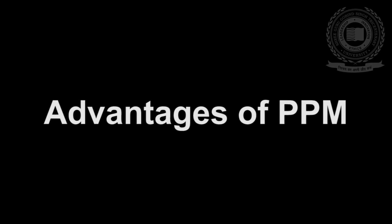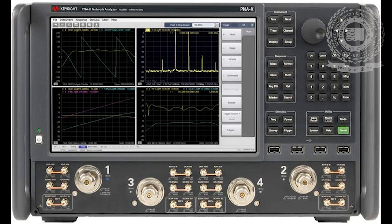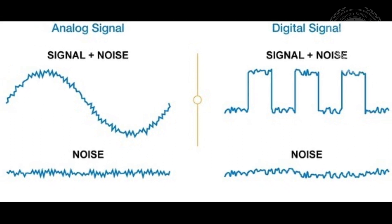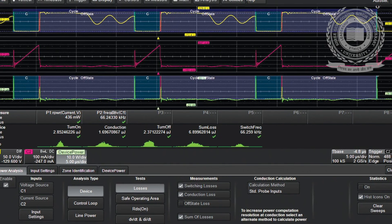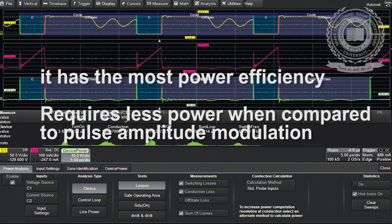Advantages of pulse position modulation: first, as it has constant amplitude, noise interference is less; second, we can easily separate signals from a noise signal; third, among all three types, it has the most powerful efficiency; fourth, it requires less power when compared to pulse amplitude modulation.